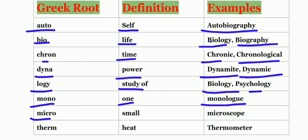Next one is micro which means small, for example, microscope. The last one is therm which means heat and the example is thermometer.